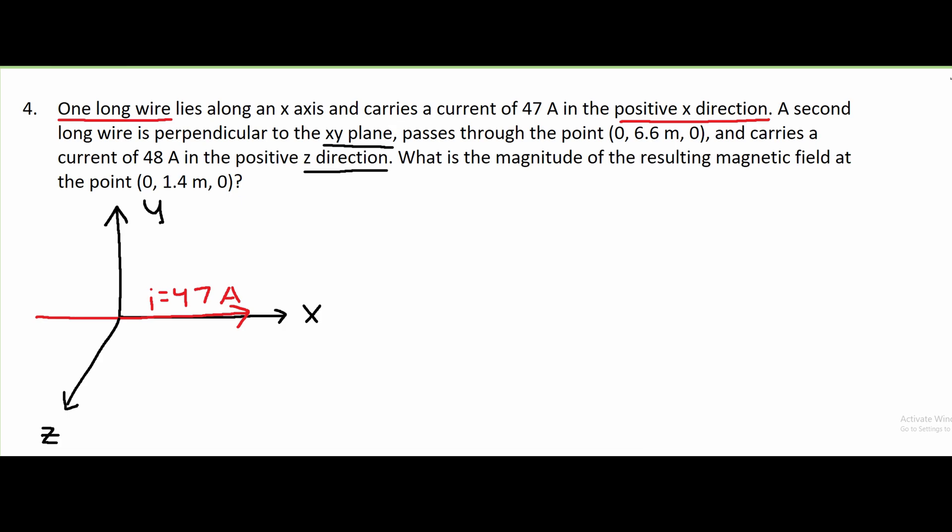We have a second long wire, and it's perpendicular to the xy plane, and it passes through this point. We are given this point specifically. This is our x, y, and z. So at 6.6 meters above our axis, we can mark that as like right here.